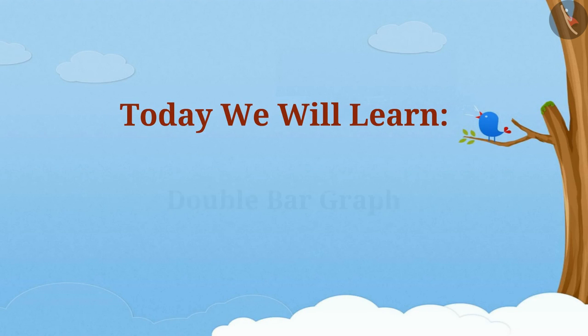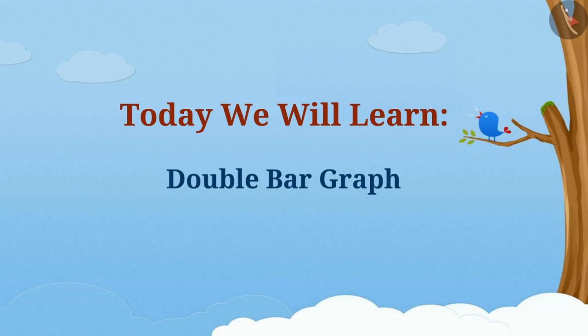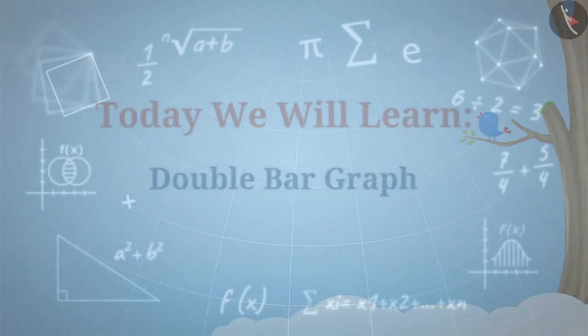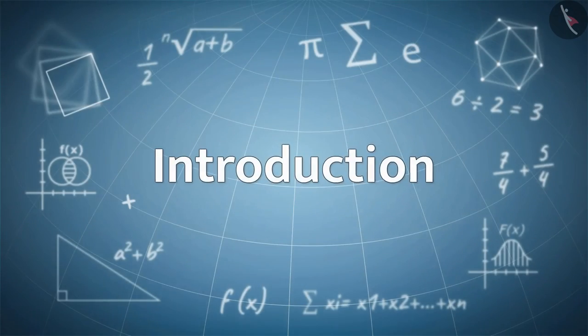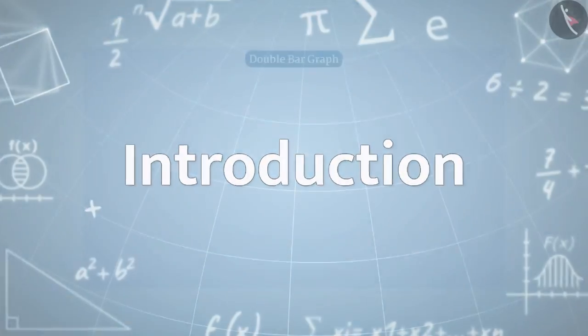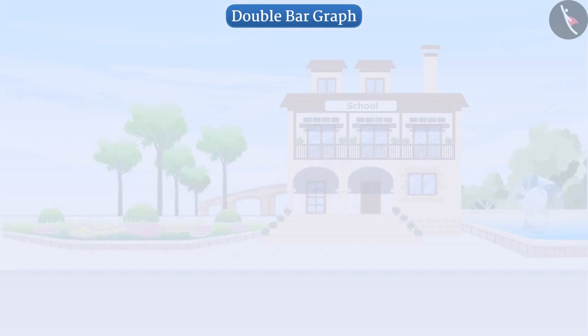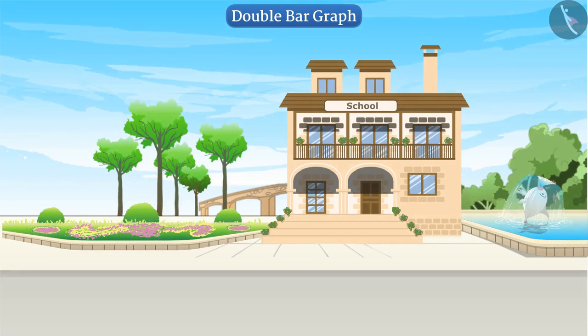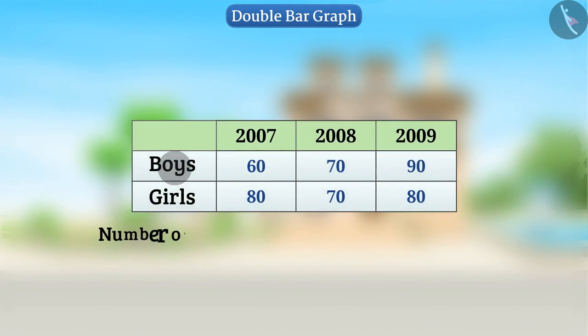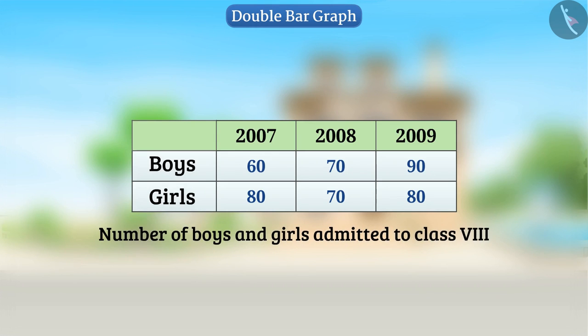Today we will learn double bar graph. Let us understand the double bar graph with the help of an interesting example. The number of boys and girls admitted to class 8 in different years in a school is presented in the table below.